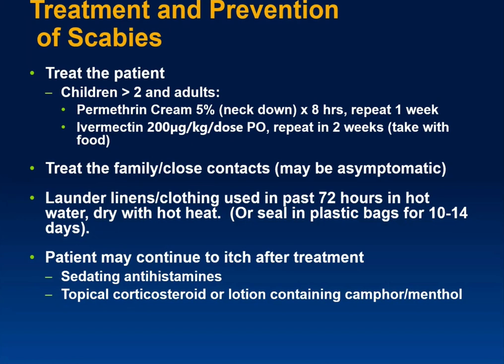Treatment-wise, in kids greater than 2 months and adults, you can use permethrin cream from the neck down, leave it on for eight hours, and repeat a week later. A newer treatment is ivermectin, 200 micrograms per kilogram per dose orally, then repeat in two weeks. It's recommended to increase absorption by taking it with food. It's also a good idea to treat family members and close contacts, some of whom may not be symptomatic but can reinfect people.